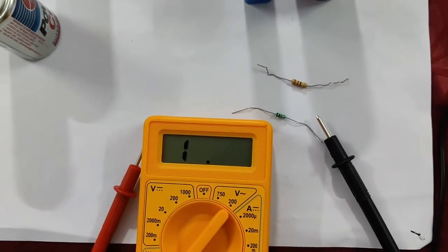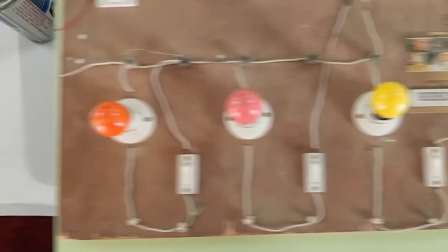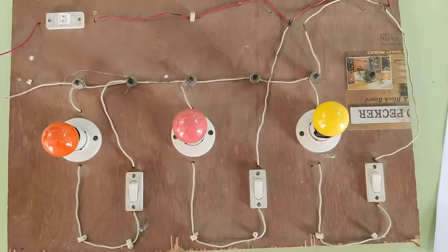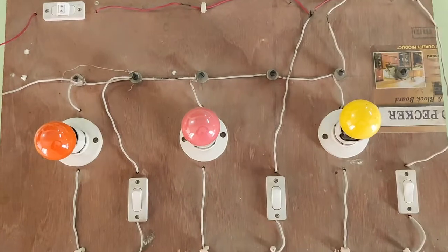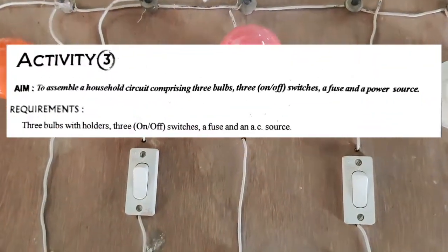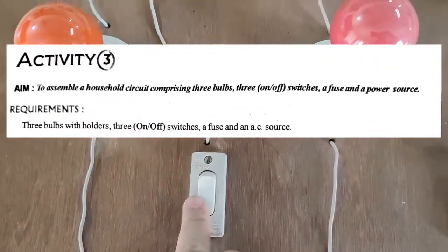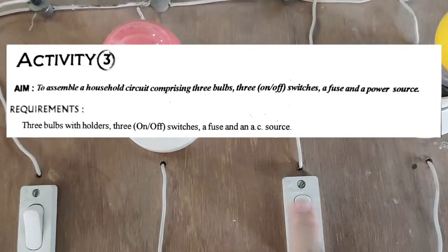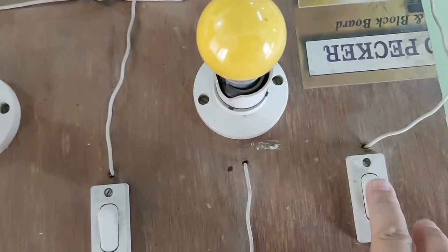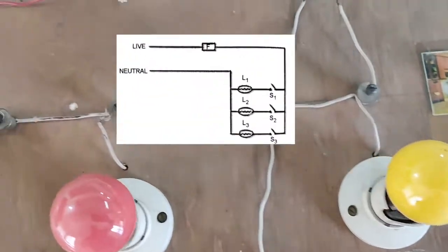Here is the second activity from section A, that is to assemble a household circuit comprising three bulbs, three on-off switches, a fuse and a power source. So here you can see three on-off switches and three bulbs.